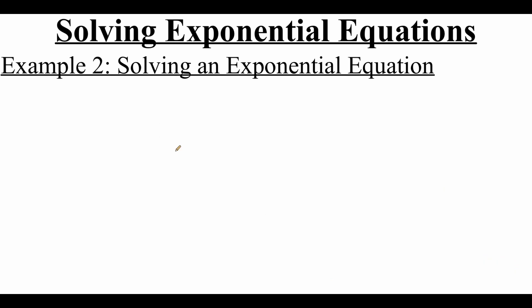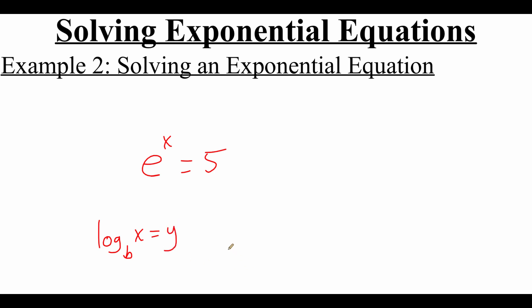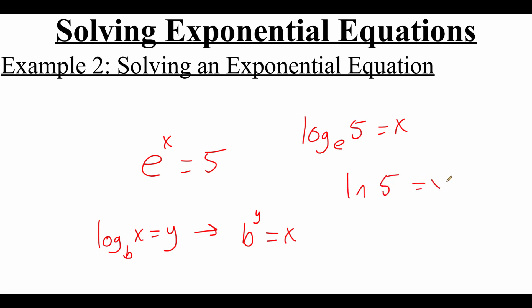Not every exponential equation can be solved by using the one-to-one property. For example, if we have something like e to the x equals 5, there's not a way for us to rewrite the right-hand side as e being raised to some nice power, so we have to use a different strategy. Exponential and logarithmic equations are very much related to each other, and we can actually convert back and forth between logarithms and exponentials. If we have log base b of x equals y, we can turn that into an exponential equation that says b to the y equals x. So what I'm going to do is take this equation and turn it back into logarithmic form. This would become log base e of 5 equals x, but log base e is just the natural log, so this is the natural log of 5 equals x.